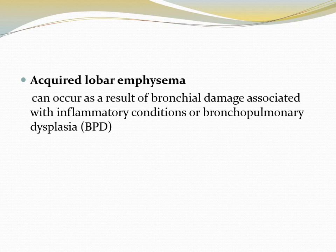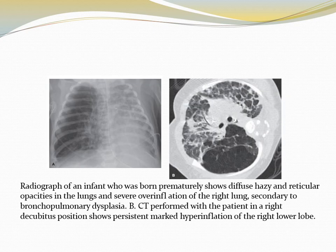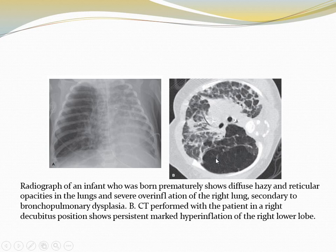Acquired lobar emphysema can occur as a result of bronchial damage associated with inflammatory conditions or bronchopulmonary dysplasia. In this case, a radiograph of a prematurely born infant shows diffuse hazy reticular opacities in the lung and severe overinflation of the right lung secondary to bronchopulmonary dysplasia. CT shows persistent marked hyperinflation of the right lower lobe only, compressing the rest of the lung. Surgical removal of that lobe allows everything to return to normal.